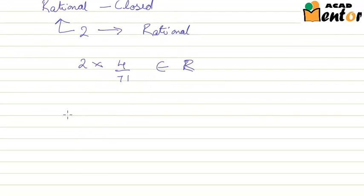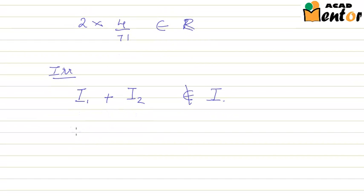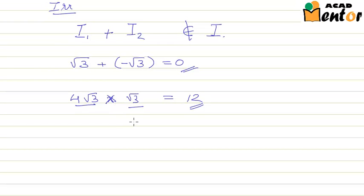This does not necessarily hold true for irrational numbers. When any operation is done on two irrational numbers i1 and i2, it might not lead to an irrational number. For example, √3 plus (negative √3) gives you 0, which is a rational number. Similarly, 4√3 multiplied by √3 gives 12, which is also rational. Hence, it is not always true that you will get an irrational number when you perform any operation on two irrational numbers.